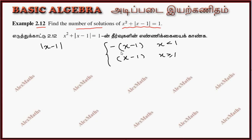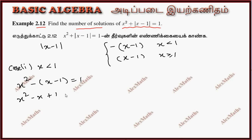Let's redefine. We have two cases. Case 1: when x is less than 1. In the quadratic equation, x squared plus the modulus becomes negative of x minus 1, giving x squared minus x plus 1 equals 1. So x squared minus x equals 0, meaning x equals 0 or x equals 1.